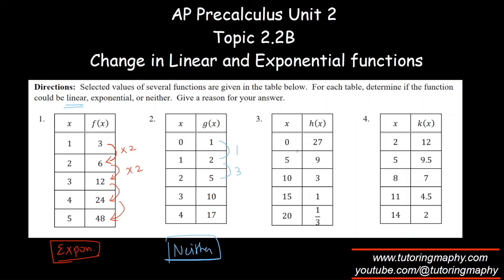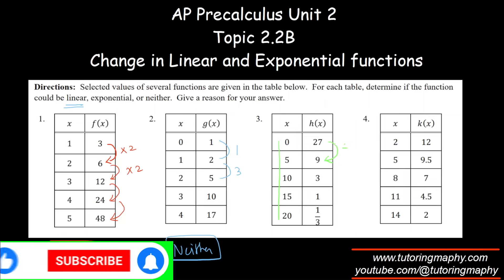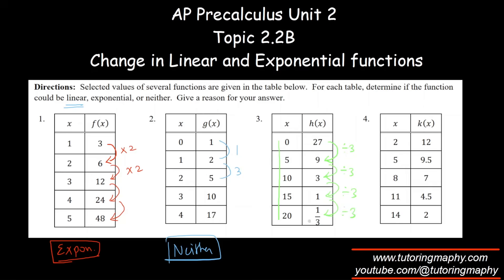The next one: 0, 5, 10, 15, 20—okay. And then if I divide 27 by 3 I get 9, 9 divided by 3 is 3, 3 divided by 3 is 1, 1 divided by 3 is 1 over 3. Yes, it's changing by the same factor, which is 1 over 3, so this is also exponential.